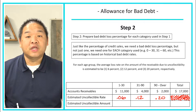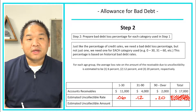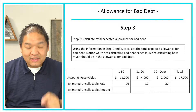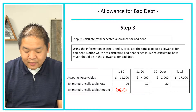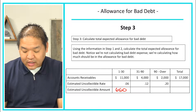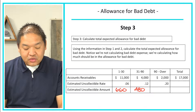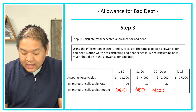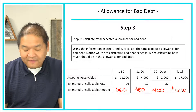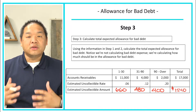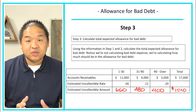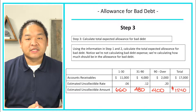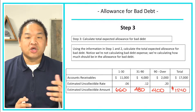Moving on to step number three, we're going to use steps one and two to calculate the allowance for doubtful accounts. We've got $11,000 times 6%, which gives us $660. Then $4,000 times 12% gives us $480. And $2,000 times 20% is $400. If we add all three numbers together, we expect that $1,540 of the $17,000 will not be paid to us — we don't know which customers, but based on previous experience we don't expect to collect $1,540.